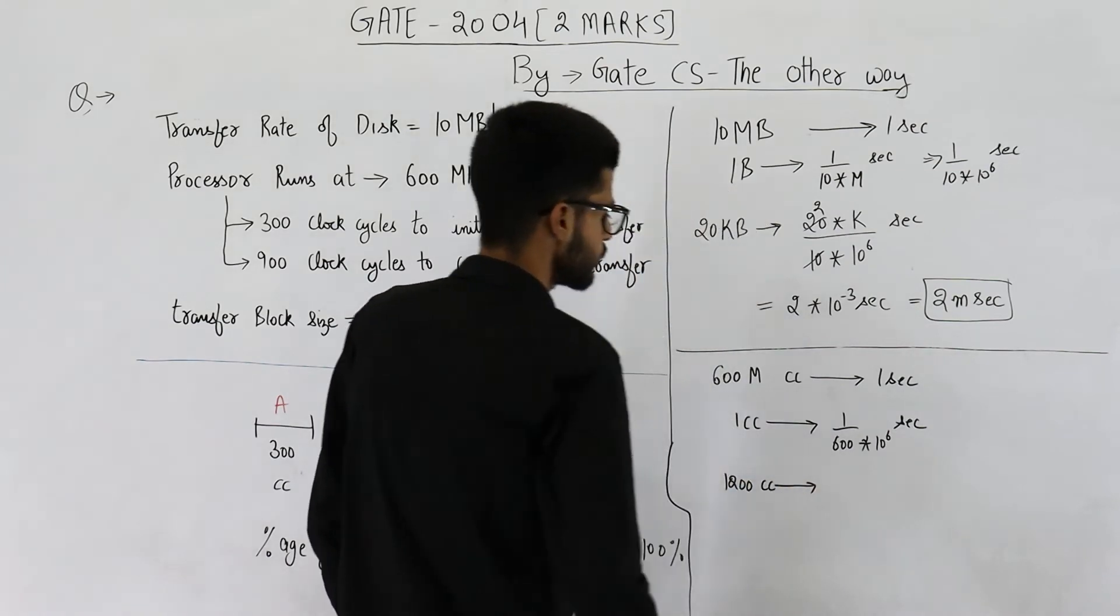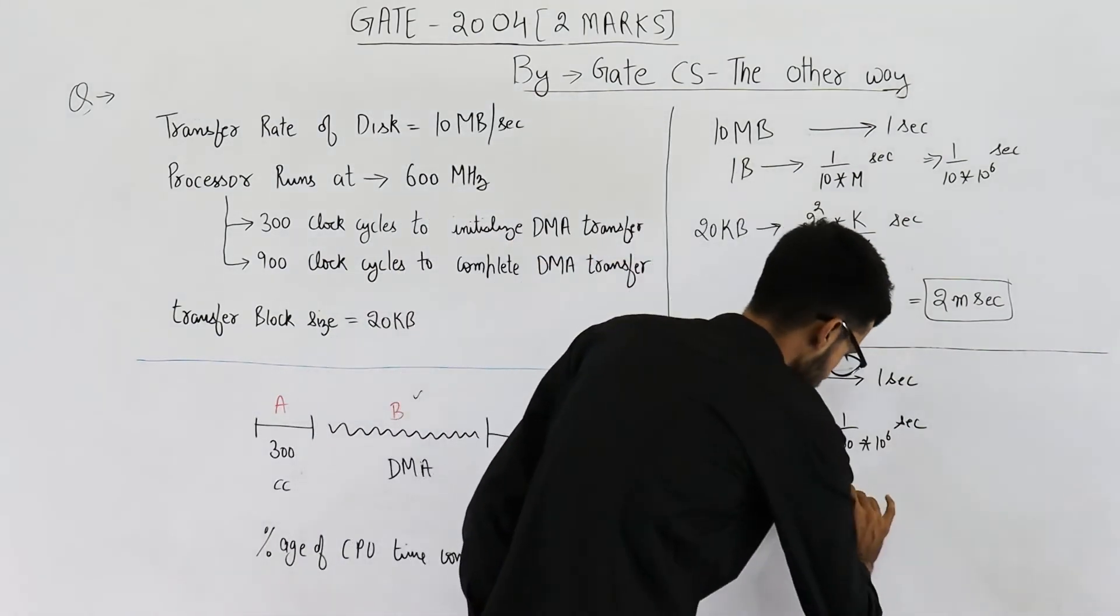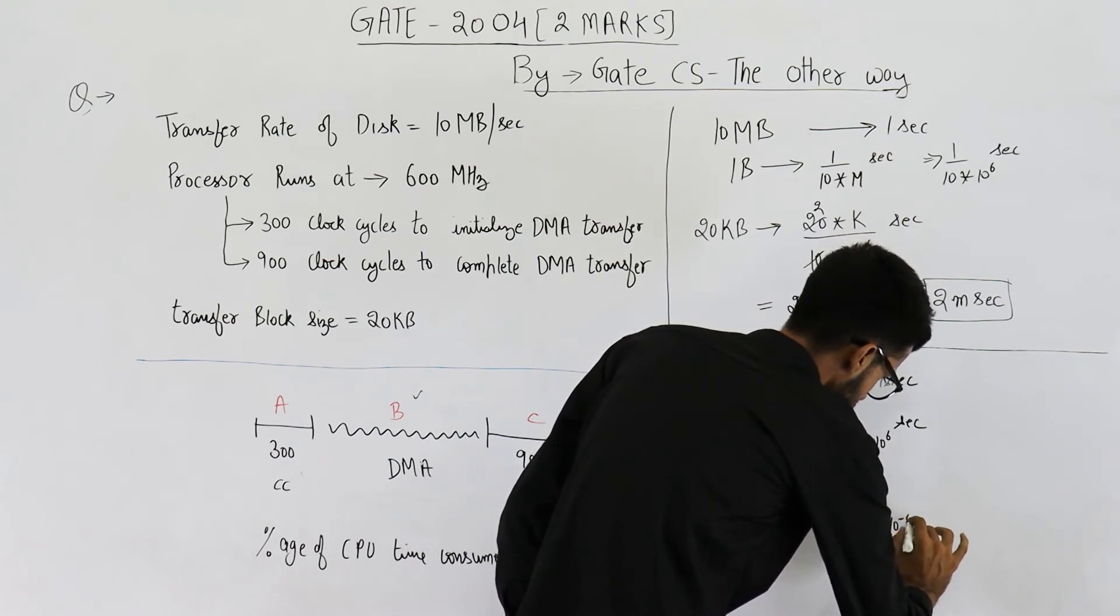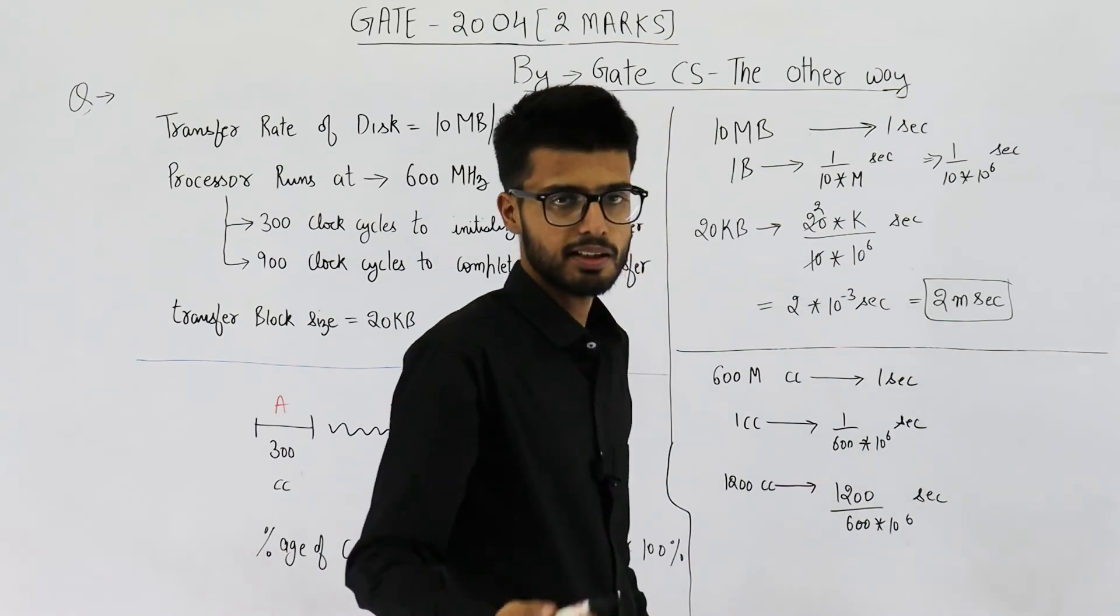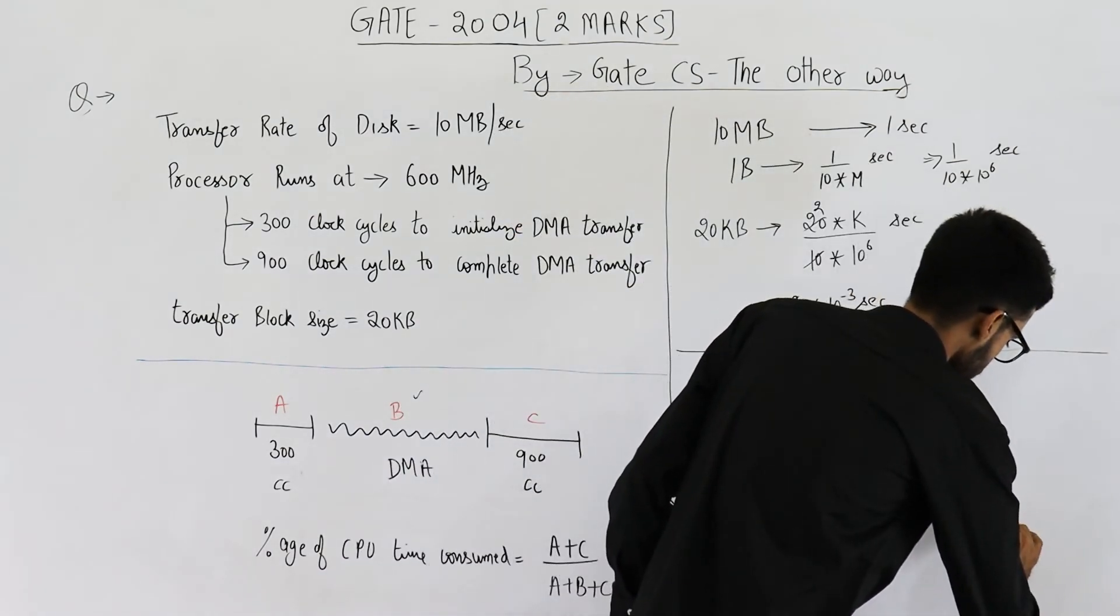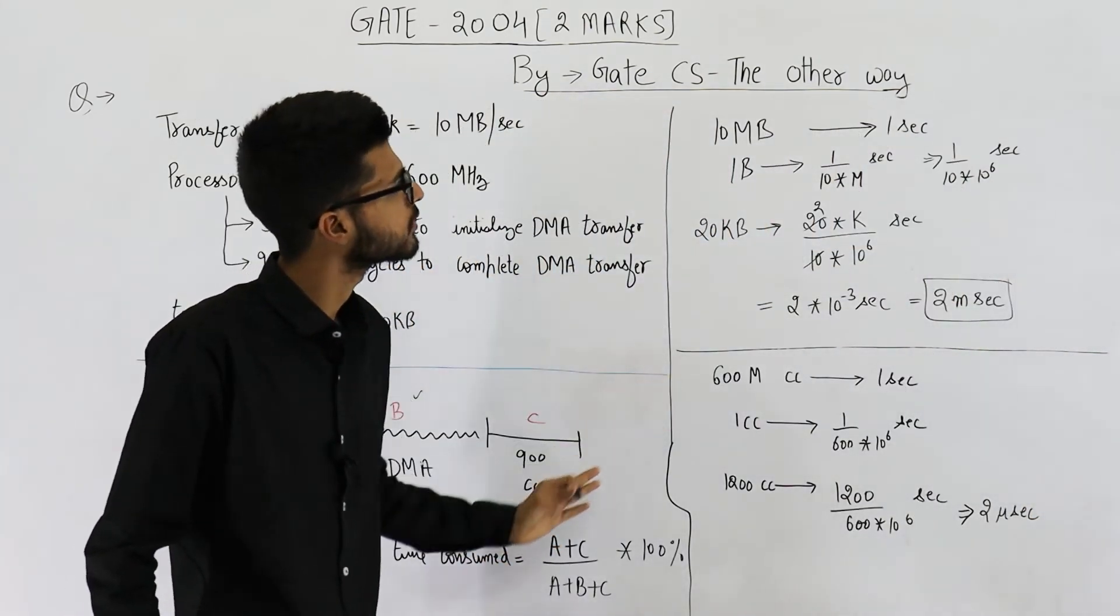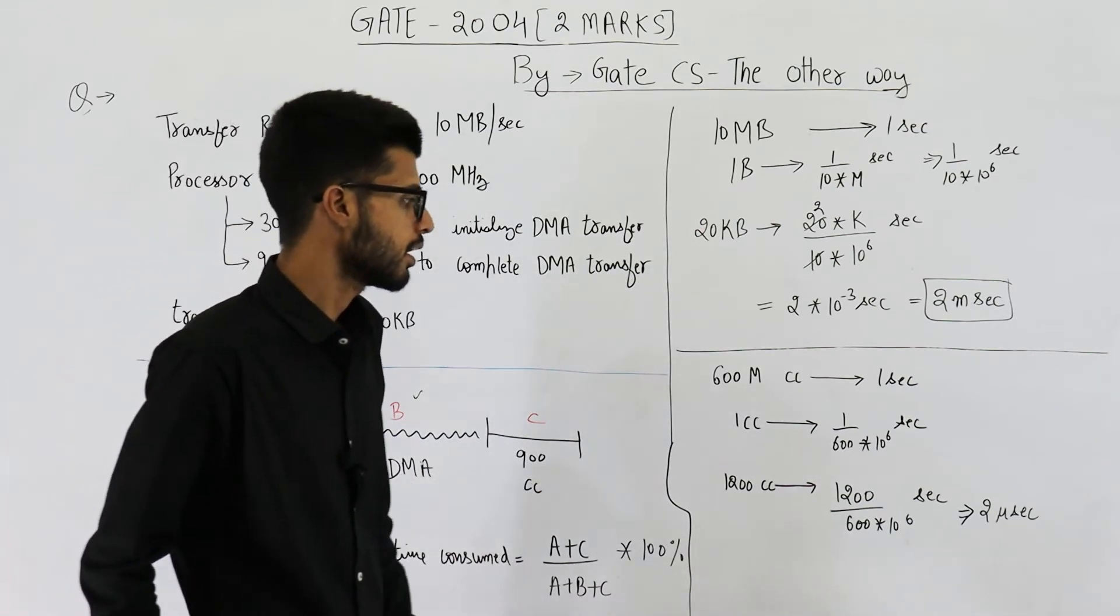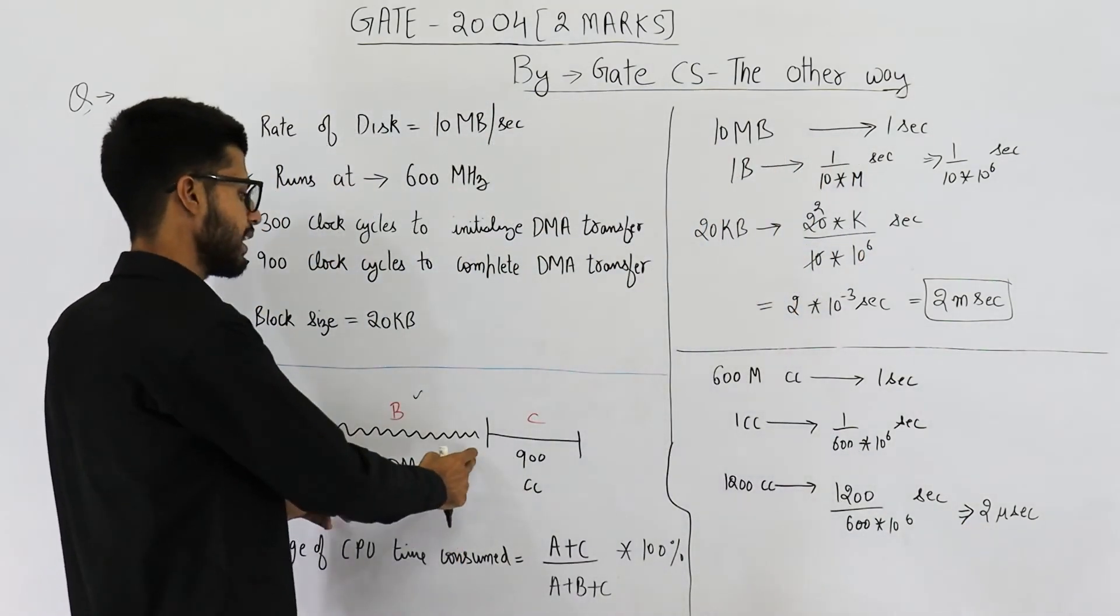Then let's find it out for 1200 clock cycles. 1200 clock cycles will require 2 microseconds maybe. 1200 divided by 600 into 10 raised to the power 6 seconds. So this is 2 upon 10 raised to the power 6. That is 2 microseconds. So this one is 2 microseconds. Now you have the formula. Just substitute the values and find the answer. A plus C, that is the time spent by CPU comes out to be 2 microseconds.